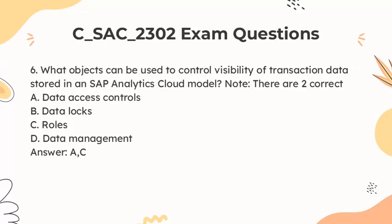Question 6. What objects can be used to control visibility of transaction data stored in an SAP Analytics Cloud model? There are two correct answers. A. Data access controls. B. Data locks. C. Roles. D. Data management. Answer: A, C.